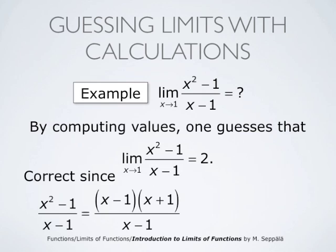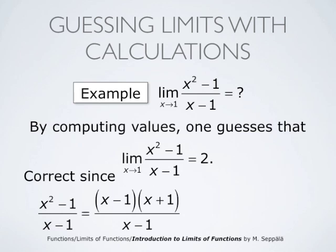And this is indeed correct in this case, because x squared minus 1 divided by x minus 1 can be simplified. x squared minus 1 is x minus 1 times x plus 1, divided by x minus 1. x minus 1 cancels out and the expression simplifies to x plus 1. And x plus 1 clearly approaches 2 as x approaches 1. So by rewriting x squared minus 1 divided by x minus 1 as x plus 1, we can confirm precisely that the actual limit is 2, which is also confirmed by the table computations.